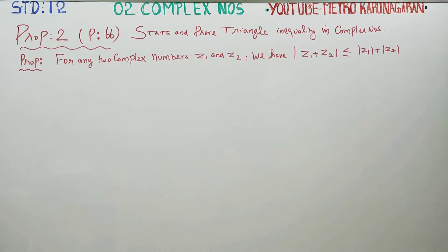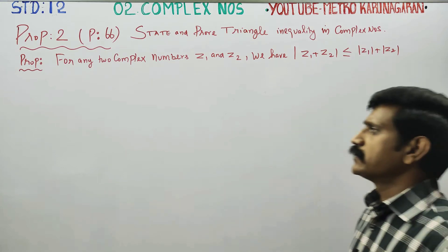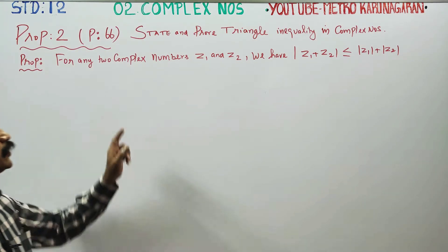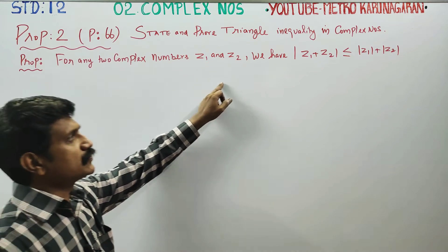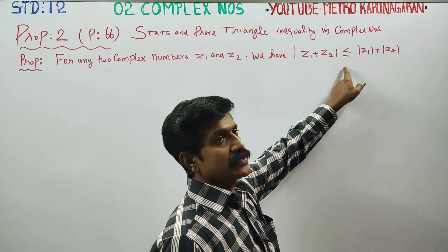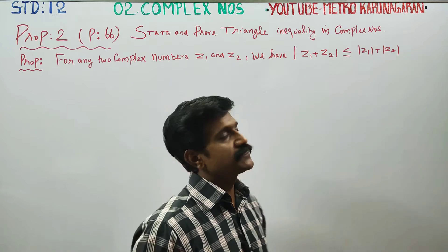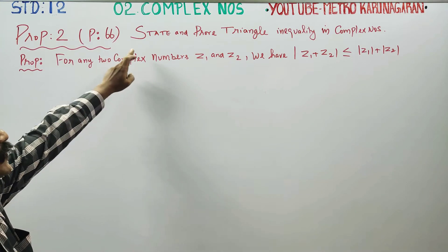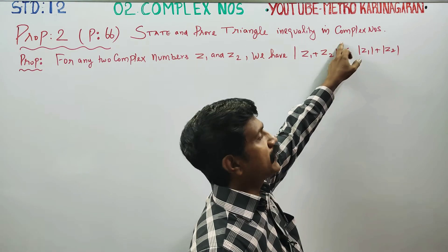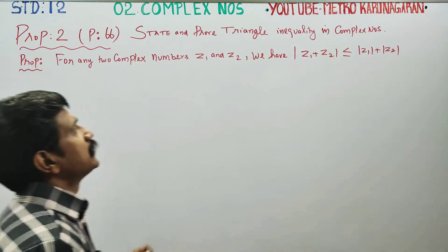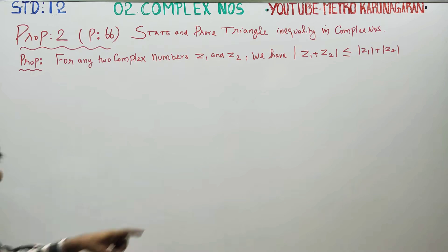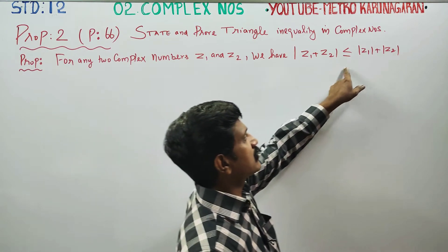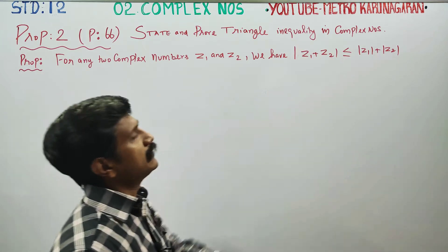Dear 12th standard students, I am Metro Karanagaran. In complex numbers, property number 2 on page 66 states that for any two complex numbers Z1 and Z2, modulus of Z1 plus Z2 is less than or equal to modulus of Z1 plus modulus of Z2. This is also called the triangle inequality. The exam question is: state and prove triangle inequality in complex numbers.